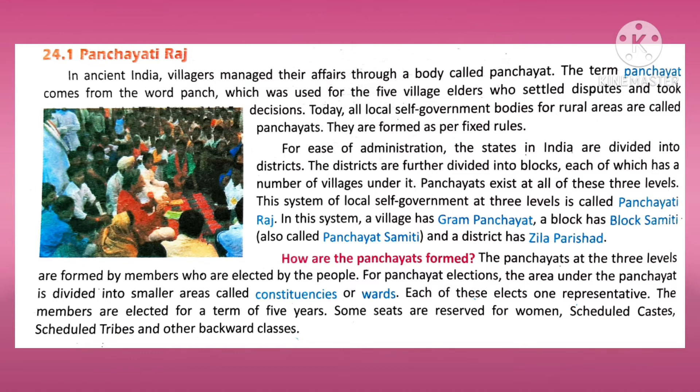How are the panchayats formed? The panchayats at the three levels are formed by members who are elected by the people. For panchayat elections, the area under the panchayat is divided into smaller areas called constituencies or wards, and each of these elects one representative. The members are elected for a term of 5 years. Some seats are reserved for women, Scheduled Castes, Scheduled Tribes, and other backward classes.